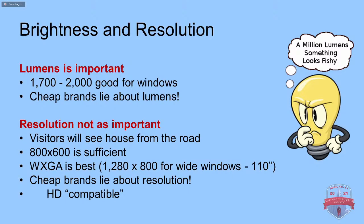In my specific situation, I have a living room window broken into two panes with a divider in the middle — a diagonal dimension of 110 inches across both windows. I bought a projector supporting WXGA widescreen at 1280x800, which is perfect for that type of dimension. Get a widescreen projector that supports that ratio and you'll be good to go. Note that cheap projectors will also lie about resolution, but that matters less since you won't be using high resolution anyway.